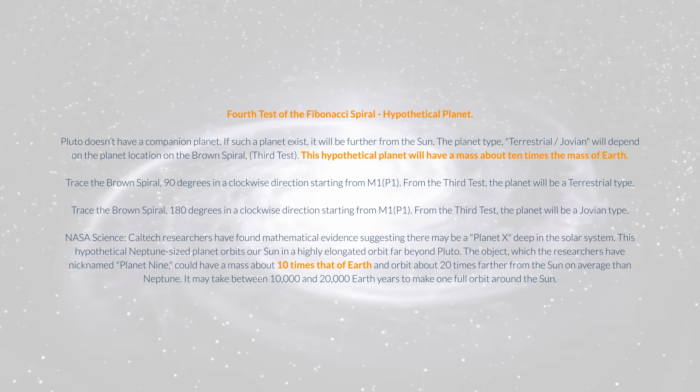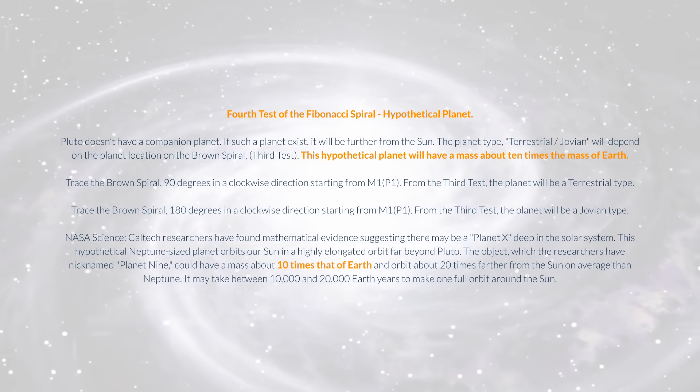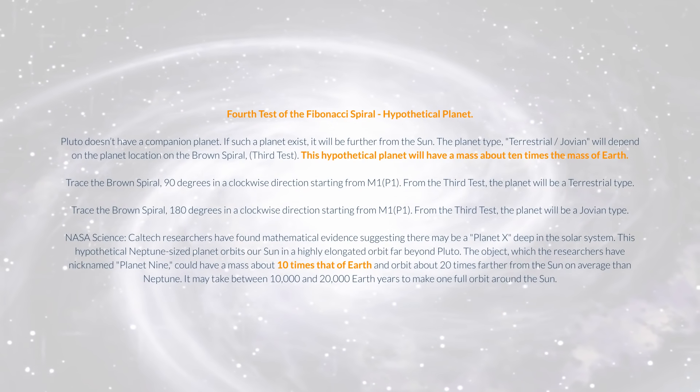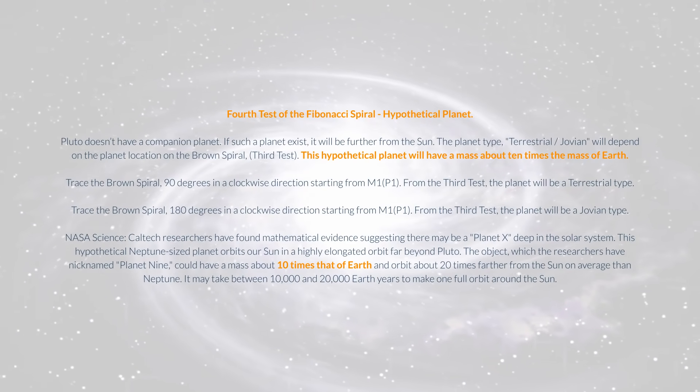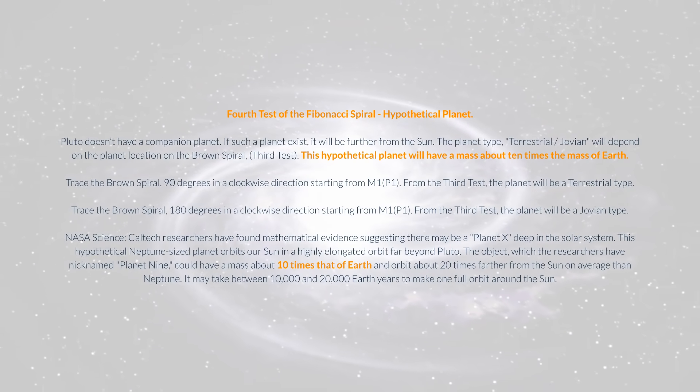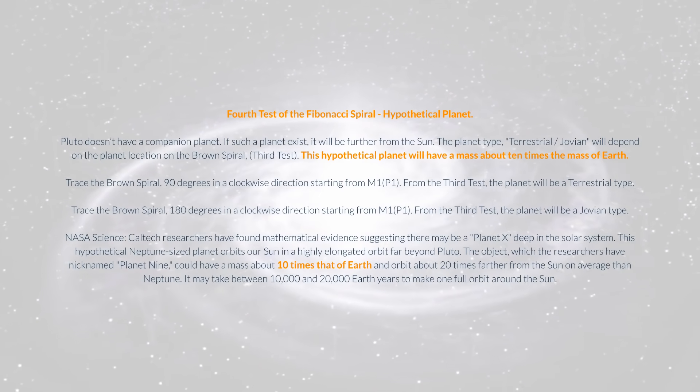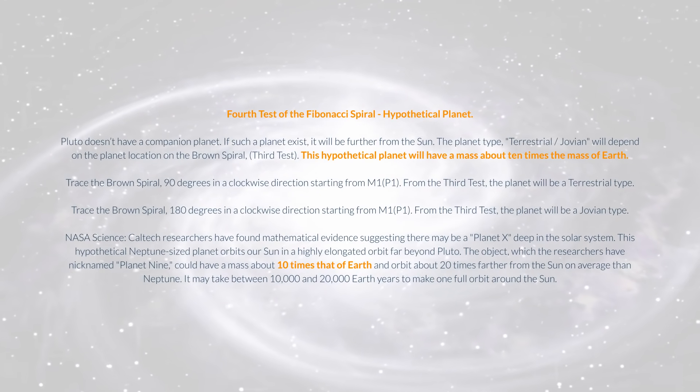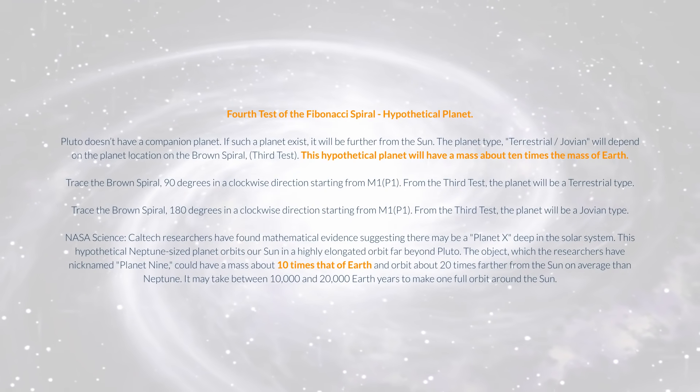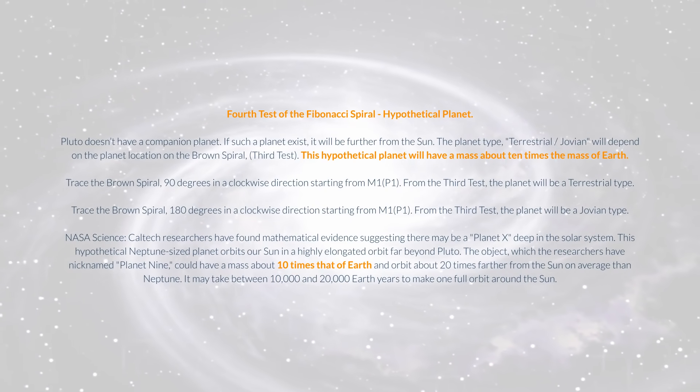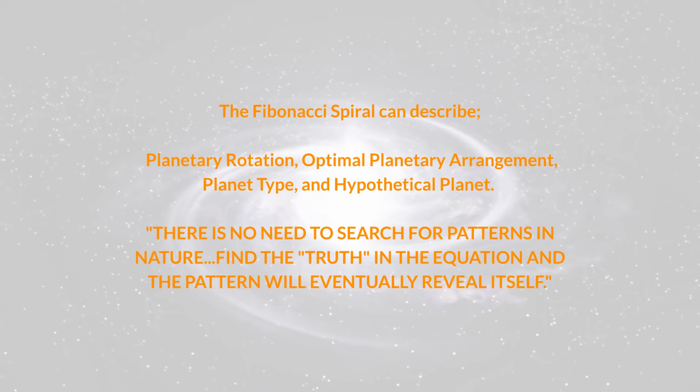NASA Science: Caltech researchers have found mathematical evidence suggesting there may be a Planet X deep in the solar system. This hypothetical Neptune-sized planet orbits our Sun in a highly elongated orbit far beyond Pluto. The object, which the researchers have nicknamed Planet 9, could have a mass about 10 times that of Earth and orbit about 20 times farther from the Sun on average than Neptune. It may take between 10,000 and 20,000 Earth years to make one full orbit around the Sun.